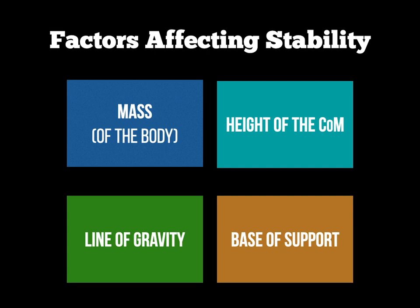Going back to the line of gravity: if I'm standing upright with two feet firmly on the ground, my line of gravity goes straight down through the middle of me, running between my two legs, so I'm fairly stable because the line of gravity is between my two contact points. However, if I'm on all fours, my line of gravity falls between all four base-of-support contact points, making me even more stable. So the line of gravity is closer to the ground and within the base of support.